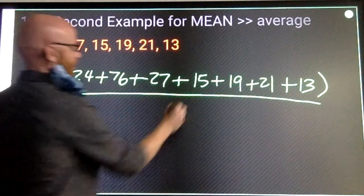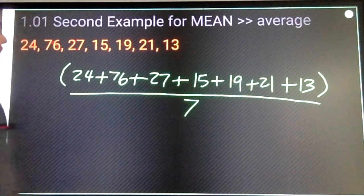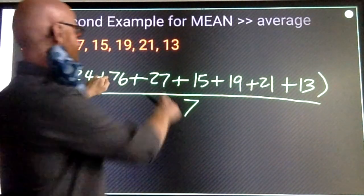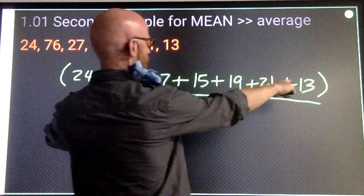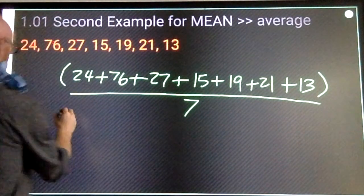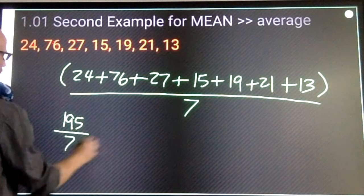All of that divided by two, four, six, seven. Divide by how many numbers we have. So again, that's 100, 140, 180, 195 over seven.